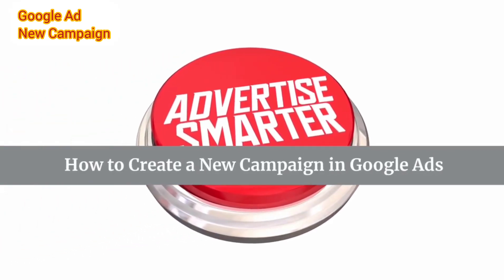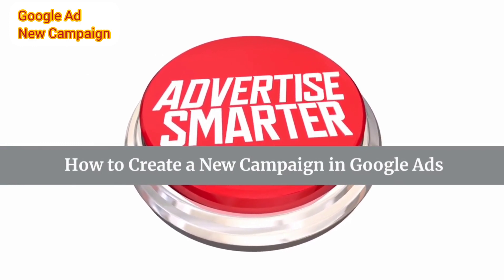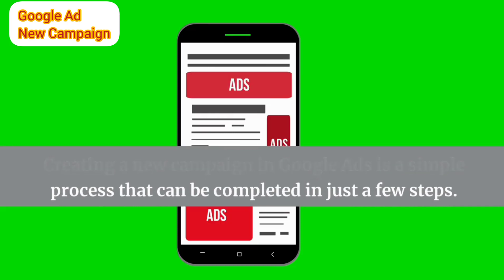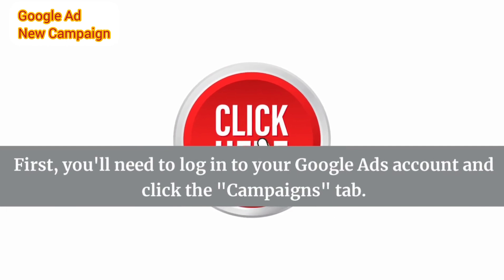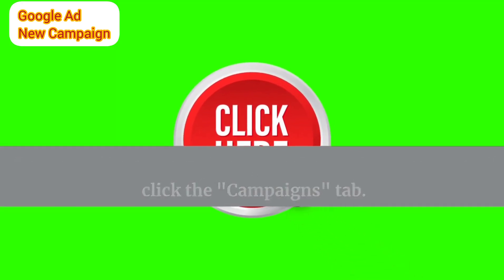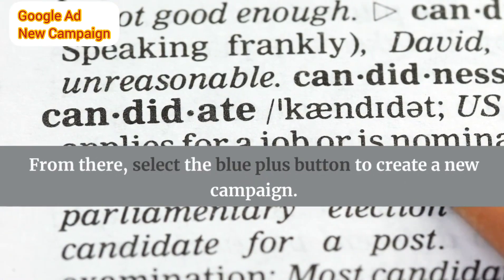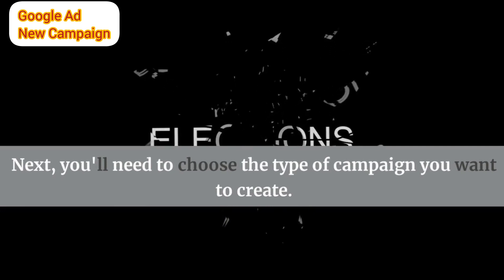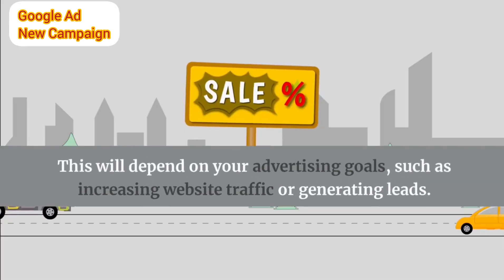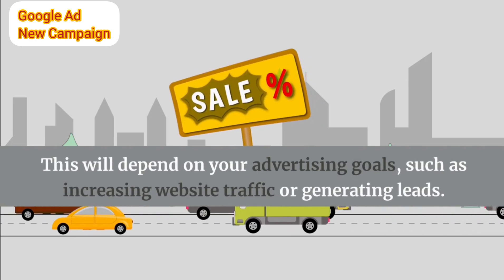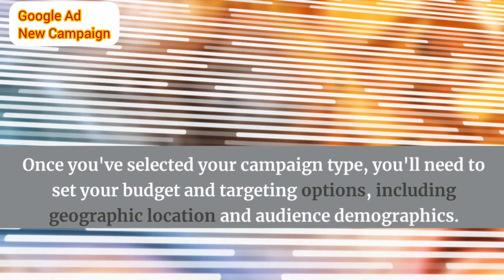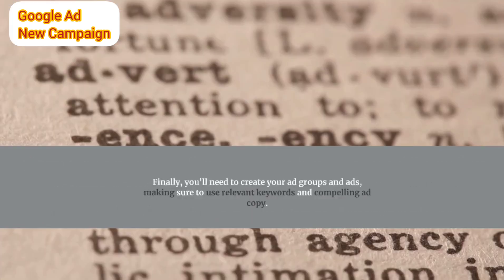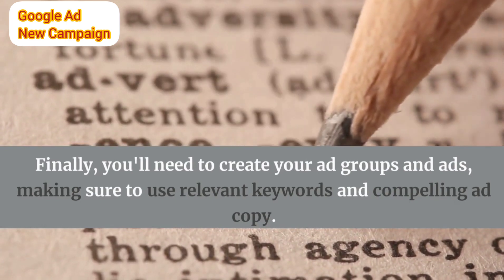How to create a new campaign in Google Ads: Log in to your Google Ads account and click the Campaigns tab. Select the blue plus button to create a new campaign. Next, choose the type of campaign you want to create — this will depend on your advertising goals, such as increasing website traffic or generating leads. Set your budget and targeting options, including geographic location and audience demographics. Finally, create your ad groups and ads, using relevant keywords and compelling ad copy.